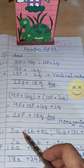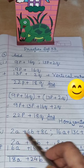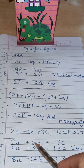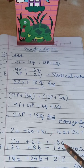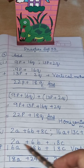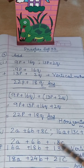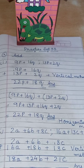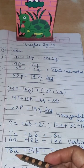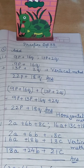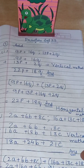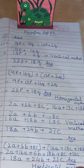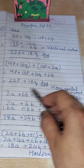Next question: add 2a plus 6b plus 8c and 16a plus 13c plus 18b — both trinomials. Arrange like terms in vertical form: 13c under c, 18b under 6b, 16a under 2a. Then add: 8 plus 13 is 21c, 18 plus 6 is 24b, and 16 plus 2 is 18a. Answer: 18a plus 24b plus 21c — trinomial.